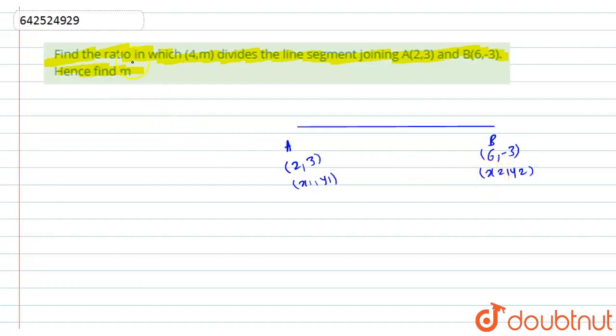Now, there is a point that is (4,m) which is dividing the line segment. Let's consider this point is over here. And we are dividing the line segment in the ratio of k is to 1. So, the ratio m:n will be equal to k:1.